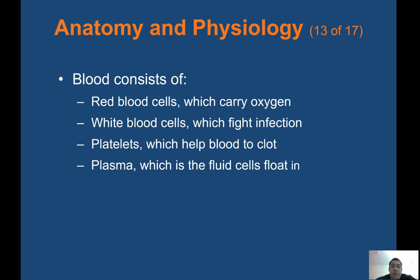Blood consists of red blood cells which carry oxygen, white blood cells which fight infection, platelets which help blood to clot, and plasma, which is the fluid the cells float in. You should all know the types of cells in the blood, what they consist of, and what they do for the body.